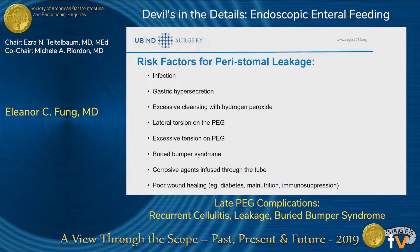Risk factors for peristomal leakage include infection and gastric hypersecretion. Cleaning with hydrogen peroxide with a lot of acid irritates the skin and can cause increasing leakage. A lot of torsion and tension on the PEG tube is also a risk factor — we really want to drive home the point of trying not to put a lot of tension or torsion on the PEG. Buried bumper syndrome is also a risk factor for leakage. Putting corrosive medications through the tube can stimulate secretions and cause leakage. And factors for poor wound healing, such as diabetes, malnutrition, or immunosuppression, can also lead to increased leakage.